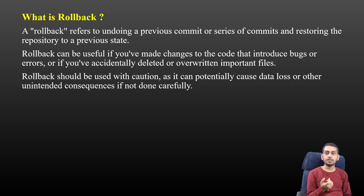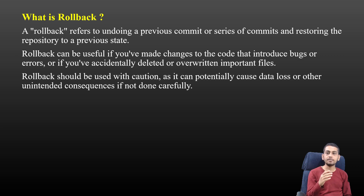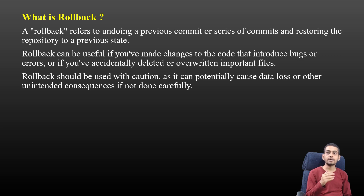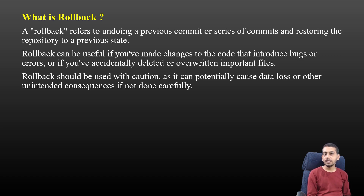So rollback means undoing to a previous commit or a specific commit — 1st commit, 2nd commit, 3rd commit, 4th commit, 5th commit, 6th commit, up to the 10th commit. So rollback goes to a previous commit, or a series of commits, and restores the repository to a previous working state.